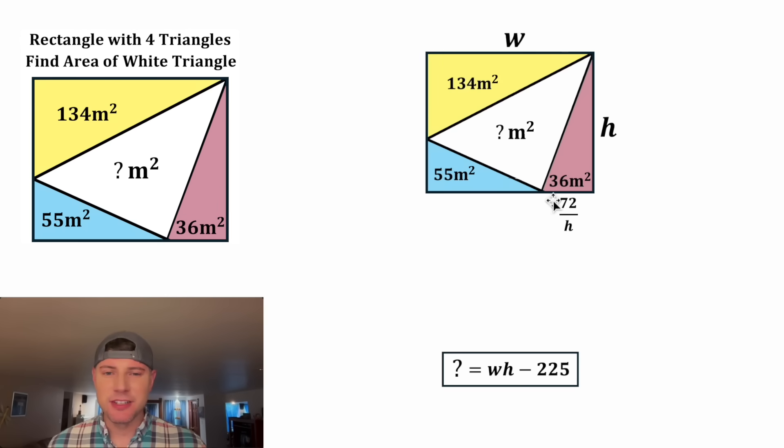And now that we have this distance, we also know this distance. It's going to be the whole width W minus the 72 over H. That'll be this distance right here. So, so far, everything's in terms of W and H.